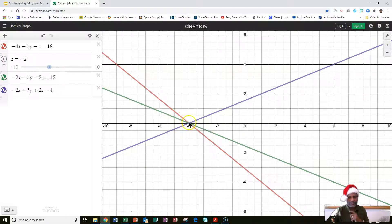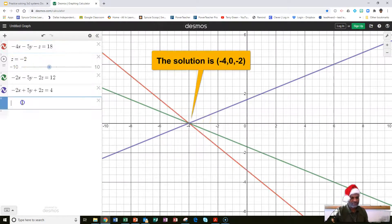If I click on that point, I'll see what x is and what y is, and z, we already know, is negative 2. So, what is my solution? My solution is what I call an ordered triple.